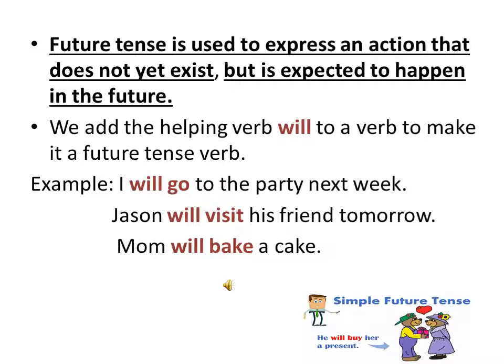Future tense is used to express an action that does not yet exist, but is expected to happen in the future. We add the helping verb will to a verb to make it a future tense verb. For example: I will go to the party next week; Jason will visit his friend tomorrow; Mom will bake a cake.